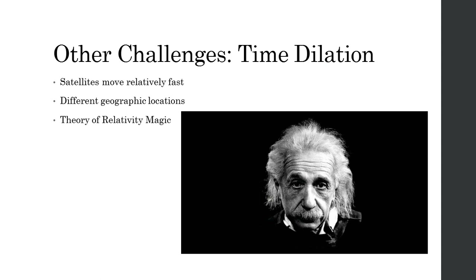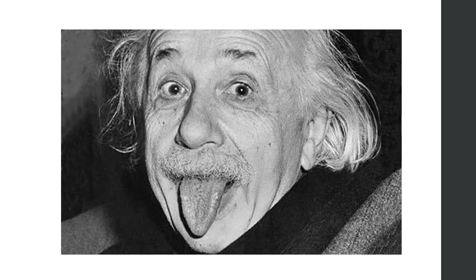Another challenge is time dilation. Satellites move relatively fast compared to the ground, so there is time dilation, which means that time moves slower for them. Also, the different geographic locations for the satellites and the two ground locations means that the gravitational potential is different. By the theory of relativity, the timing will be experienced differently at those three locations, and the only way to solve that is through general relativity modeling.